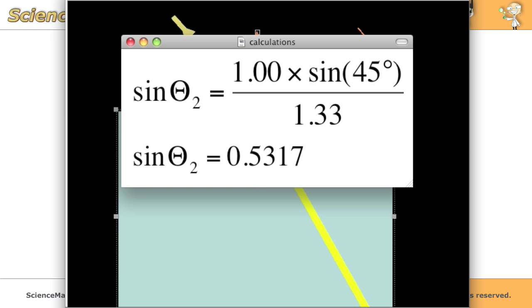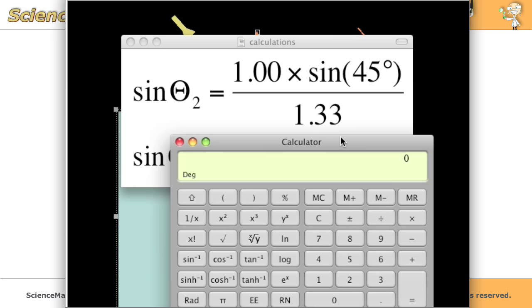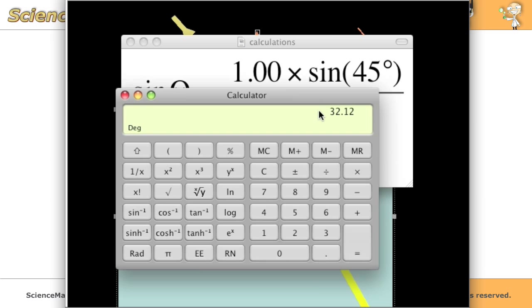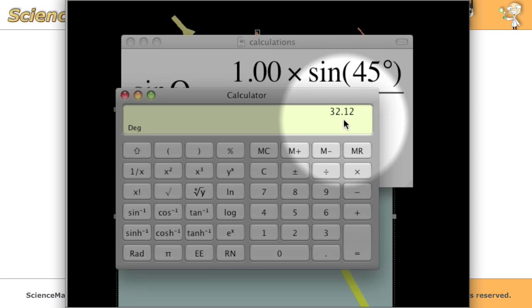So if we take our trusty calculator here and put 0.5317 and hit inverse sine, we get an angle of 32 degrees.